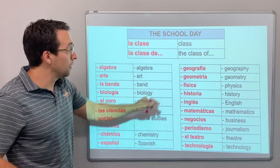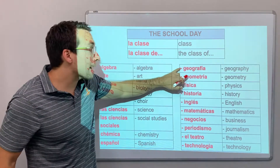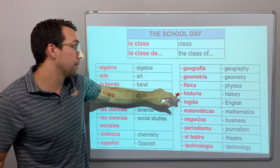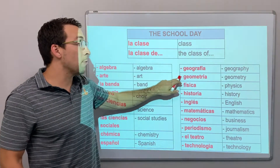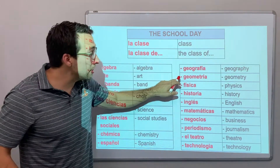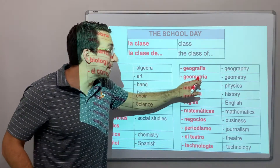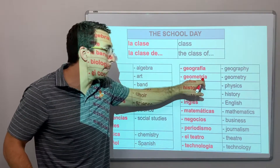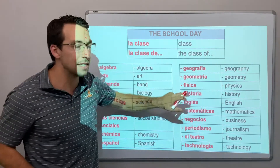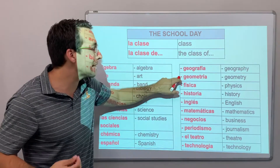Español. Geografía. Geometría — geometry. And remember, we emphasize the accent: geometría.